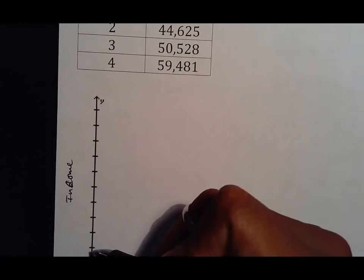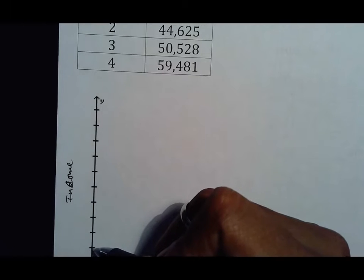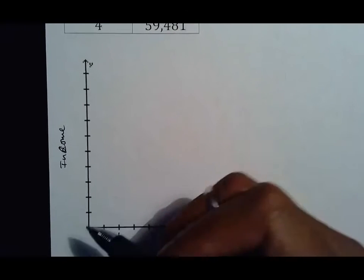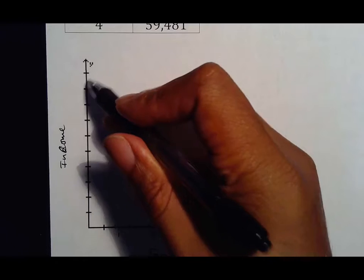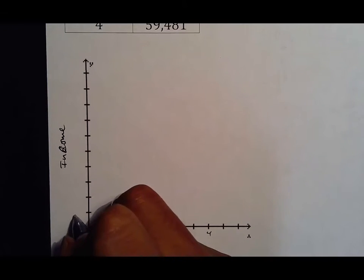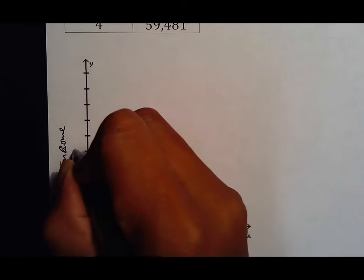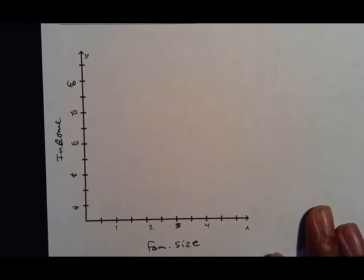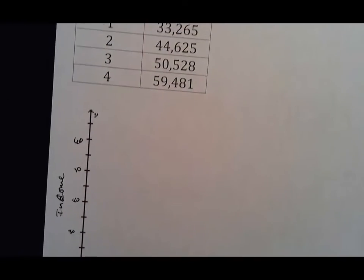Your income goes anywhere from thirty thousand to sixty thousand dollars. So maybe if we go twenty thousand, twenty-five thousand, thirty thousand, thirty-five thousand, forty thousand, forty-five thousand, fifty thousand, fifty-five thousand, sixty thousand. The hardest part about scatter plots if you're making them is just arranging your numbers there and try to make sure you use as much as possible.